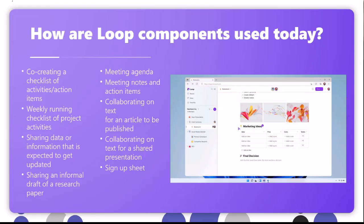Let's look at some use cases. We've covered co-collaborating on an agenda, which I use all the time. But it's actually really great for using Loop Components after meetings as well — you can capture meeting notes and have everybody adding to those notes as you go. It's also great for capturing action items. There's a Loop Component — the task list — which integrates with the Tasks app in Teams. You can pop your tasks in there, assign them to individuals, add a due date, and they will appear in the assignees' task list under 'assigned to me' in the Tasks and Planner app.